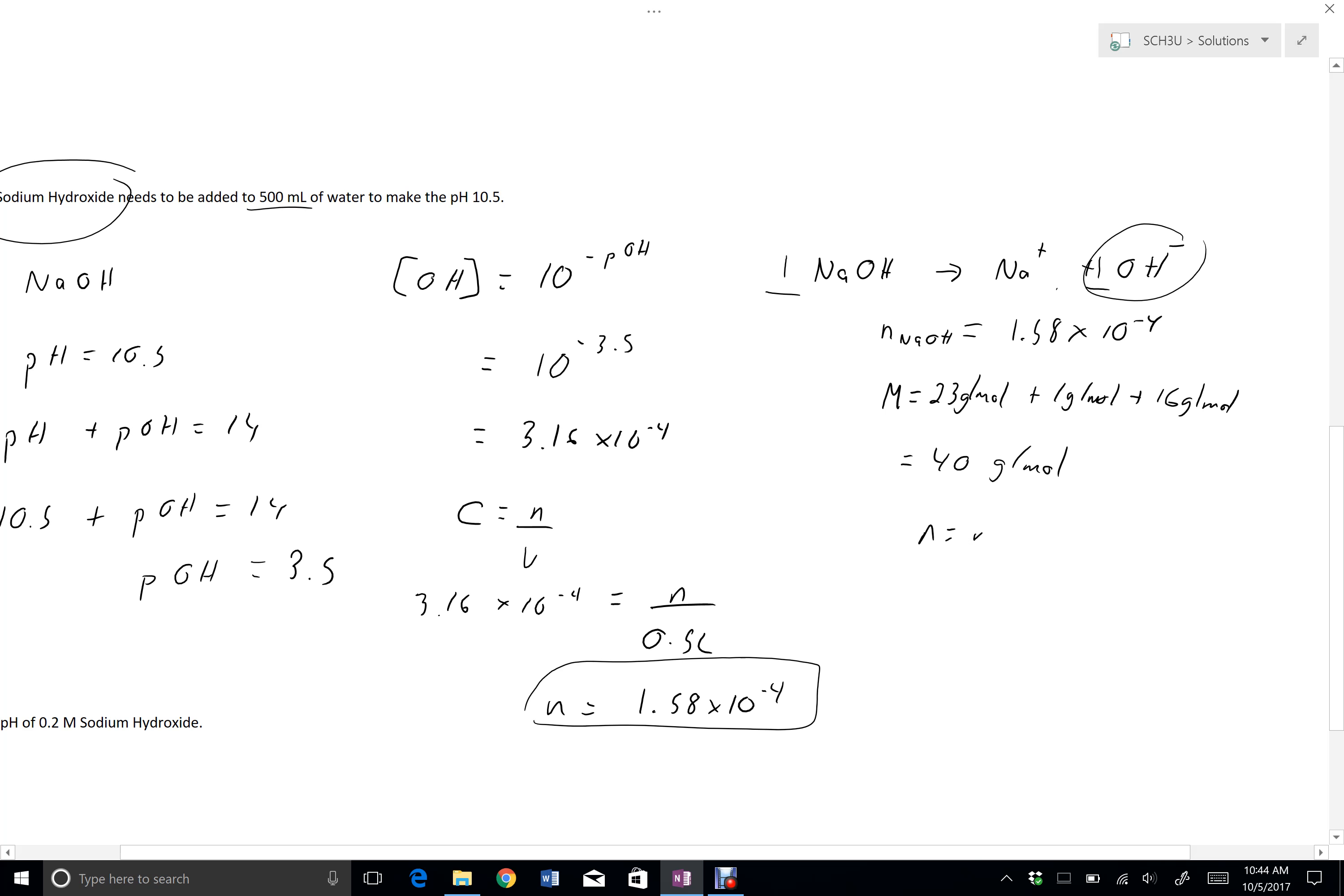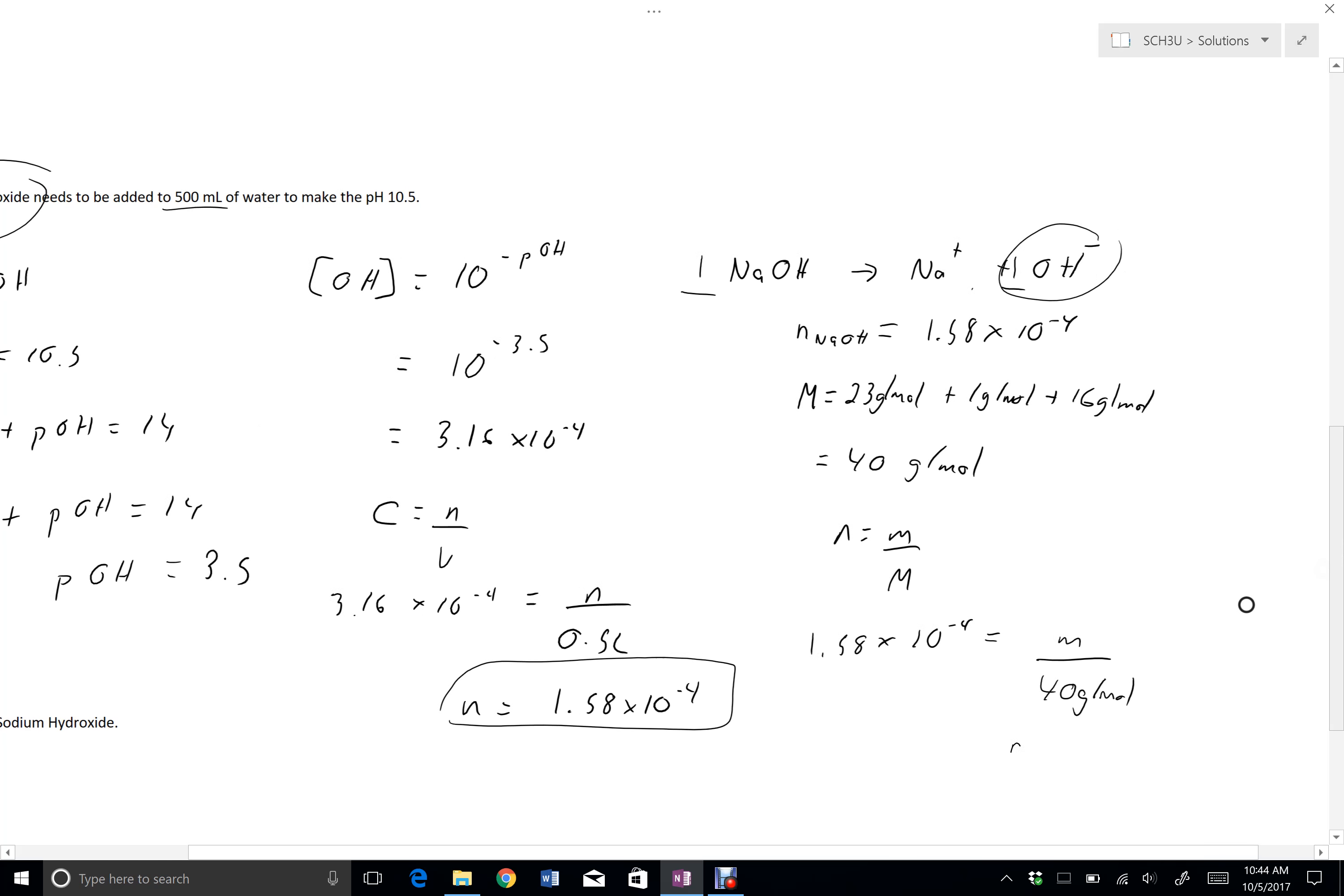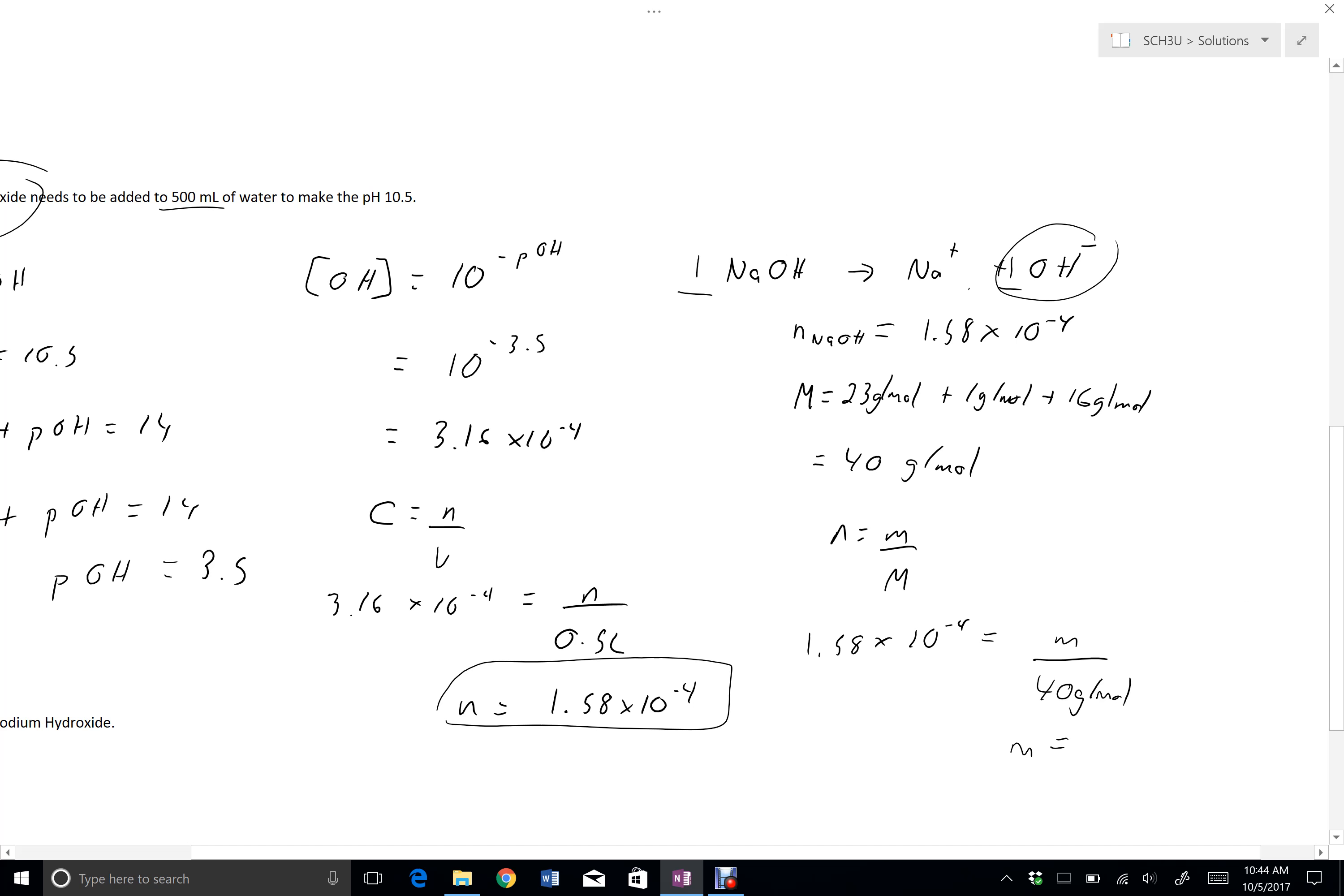Moles equals mass over molar mass. So 1.58 times 10 to the negative 4 equals the mass divided by 40 grams per mole. So the mass here that I would need is 6.32 times 10 to the negative 3 grams. So not very much at all.